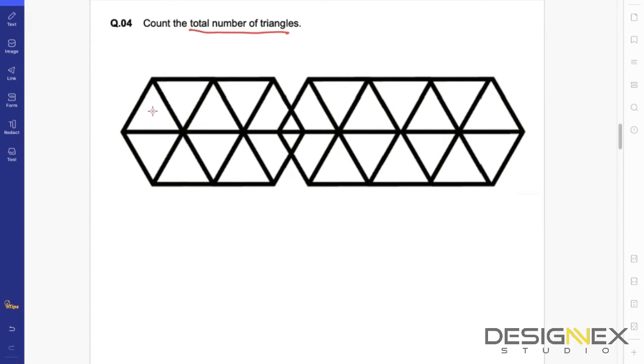Let's start from the smaller triangles. One, two, three, four, five, six, seven, eight, nine, and ten. Ten are there in this section.